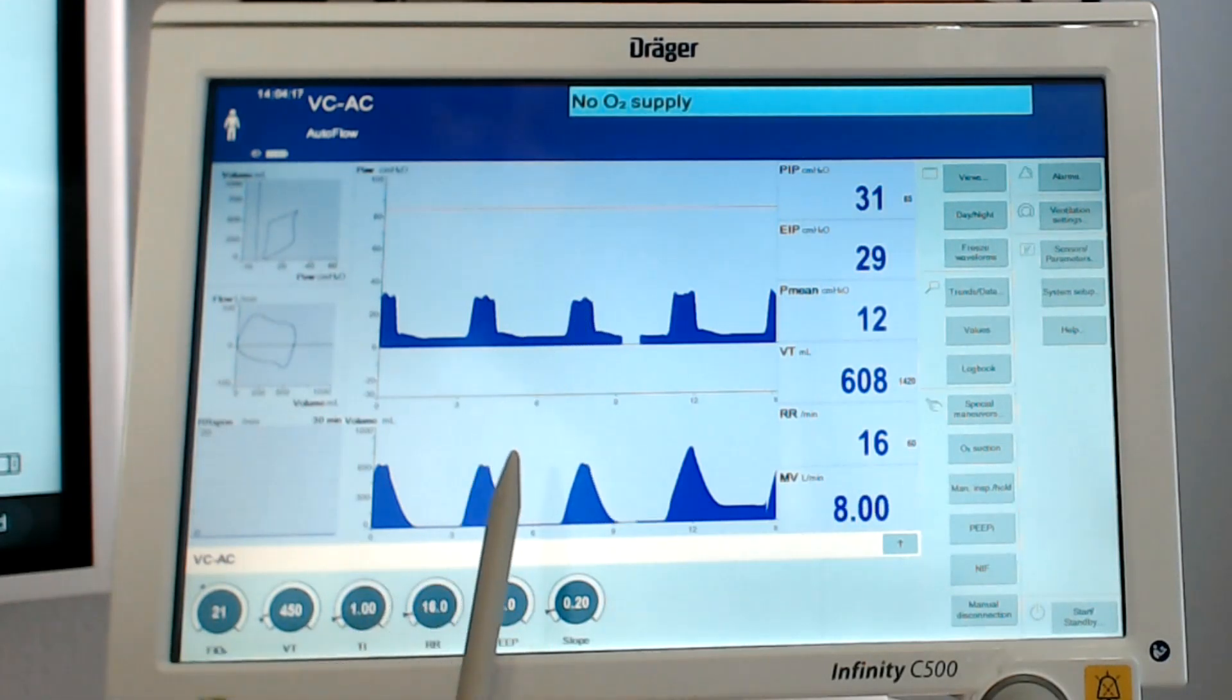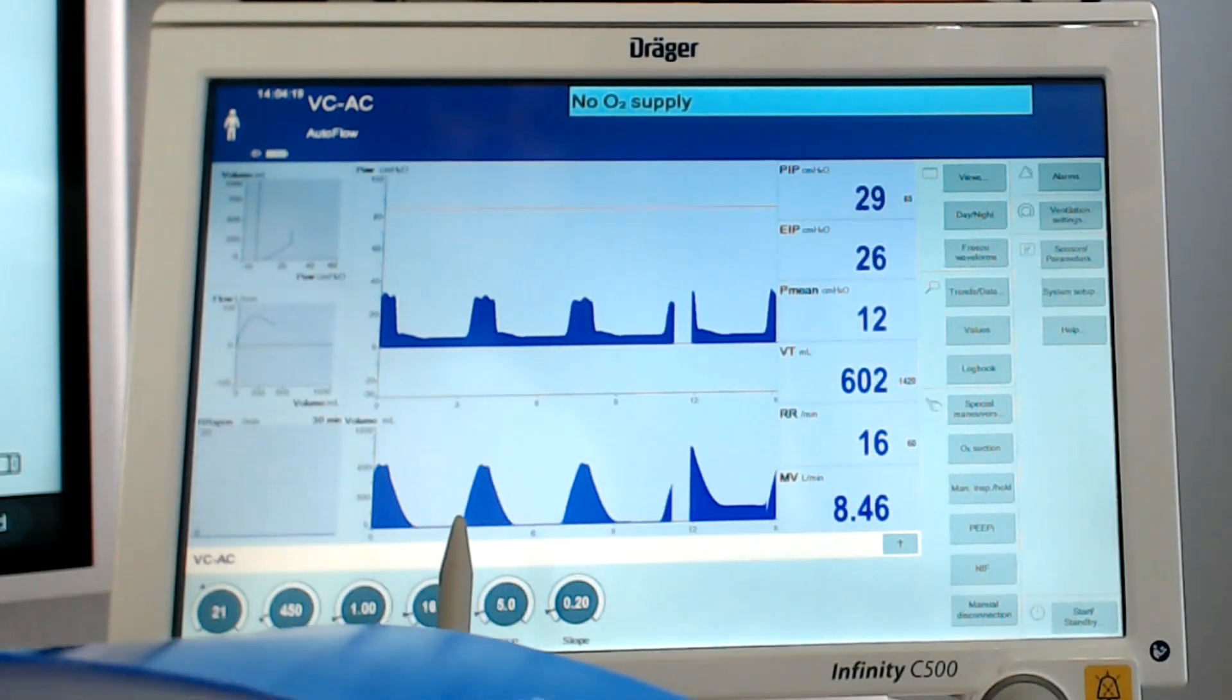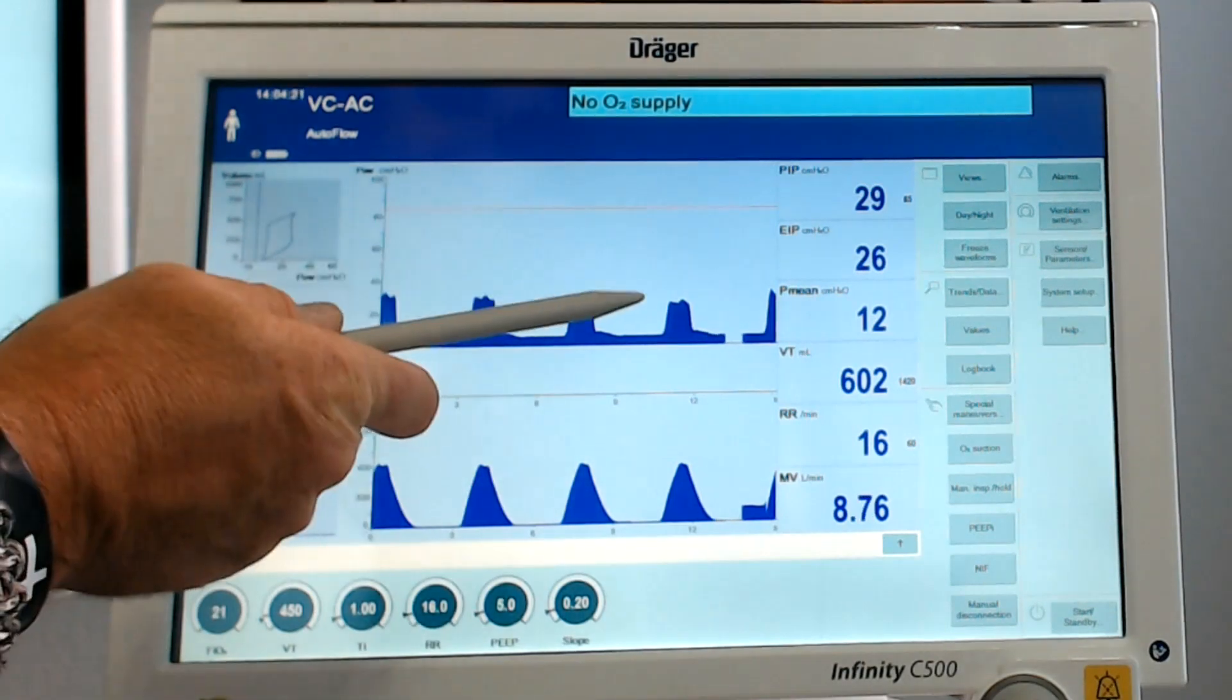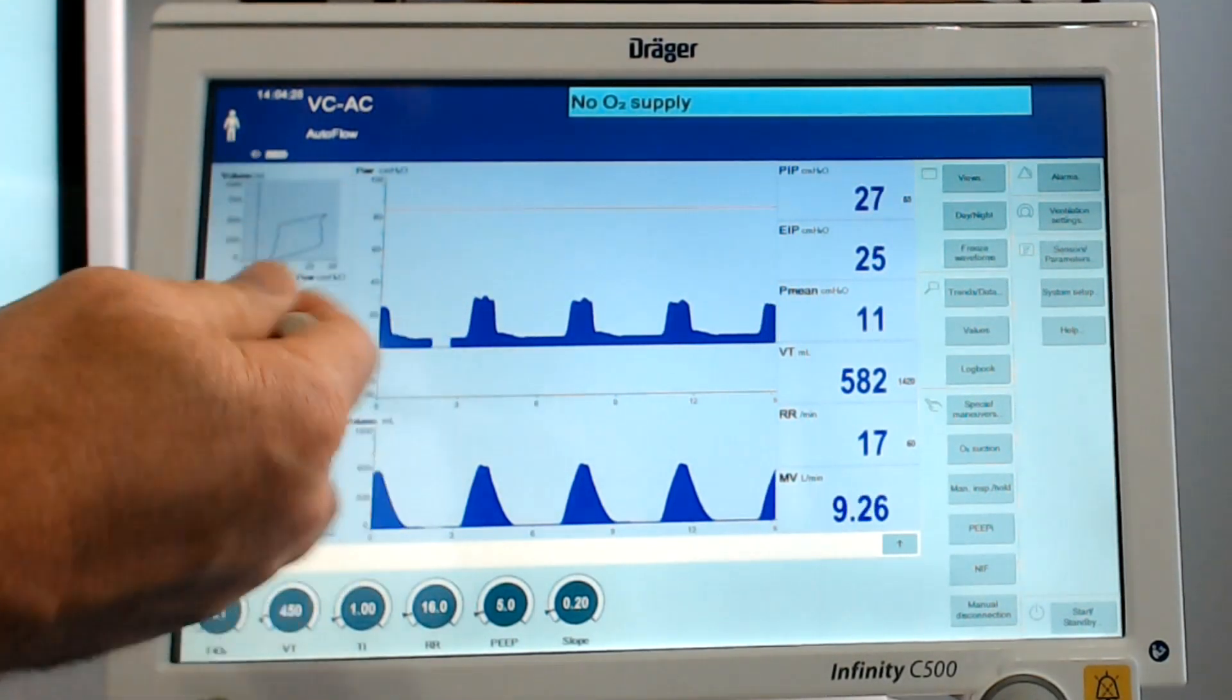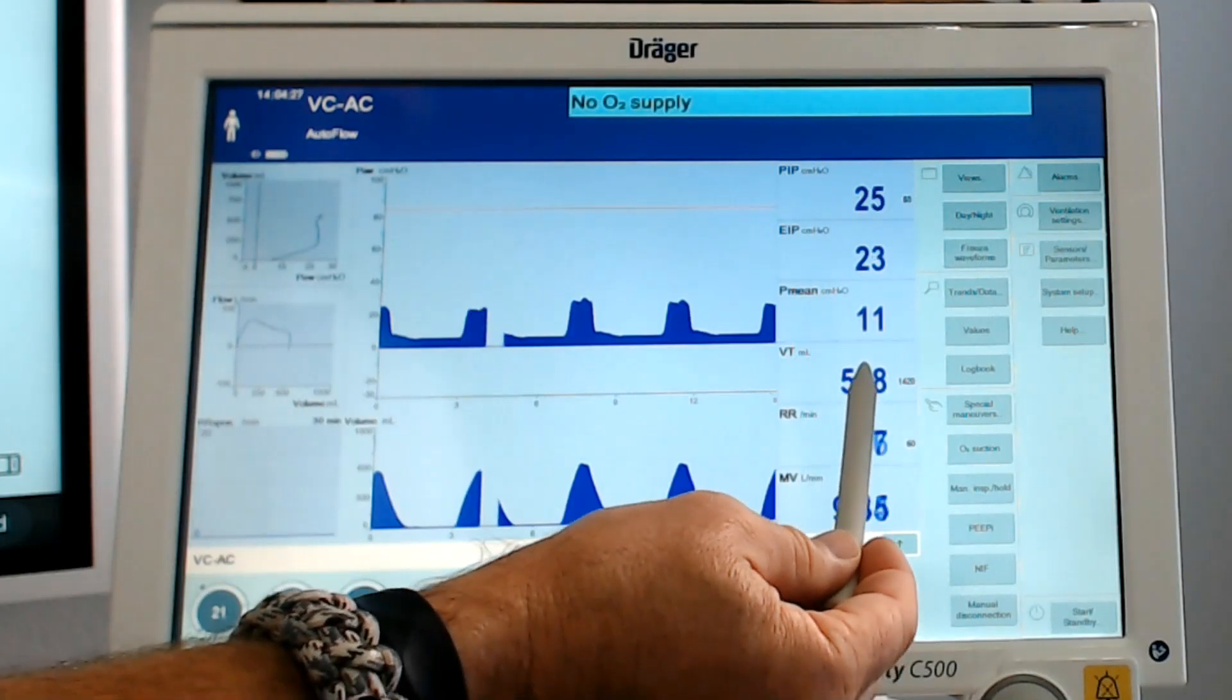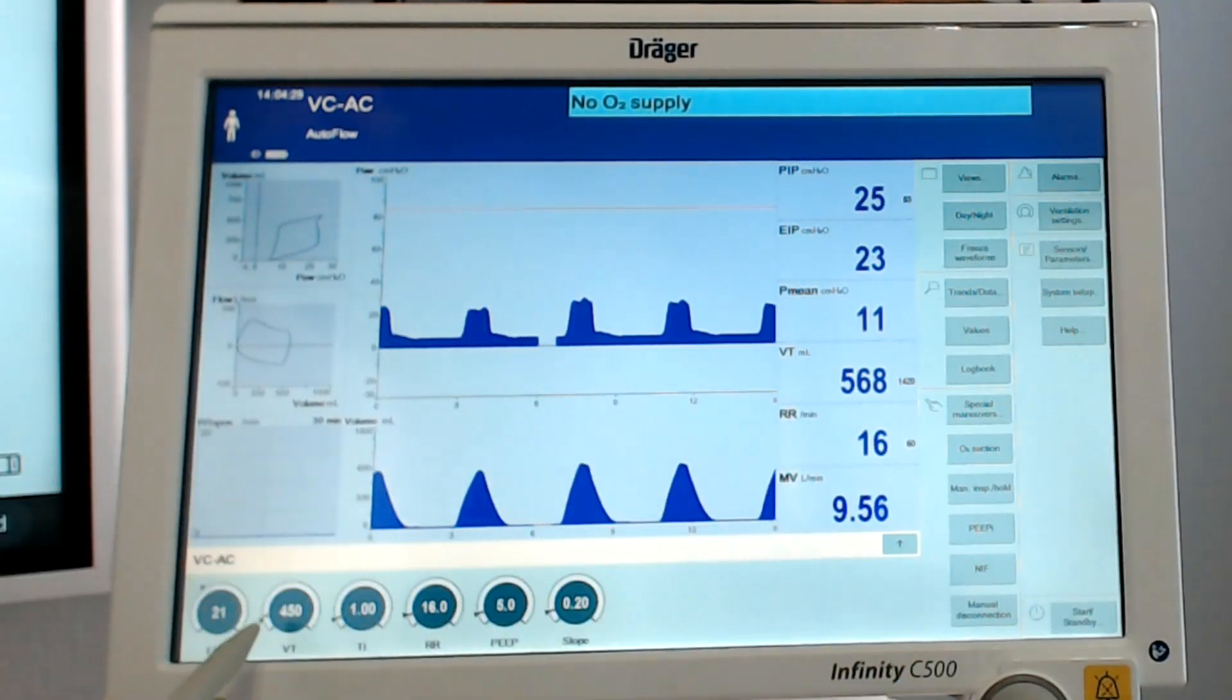The vent's going to say, wait a second, I need to turn pressure down. I need to deliver less pressure because I need smaller tidal volumes, because 600, 582, 568 is greater than my target tidal volume of 450.